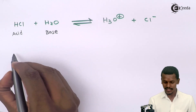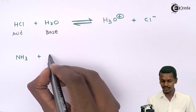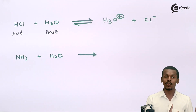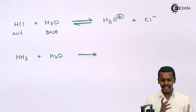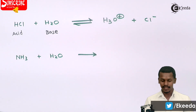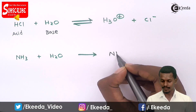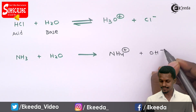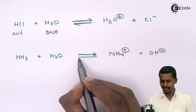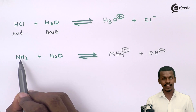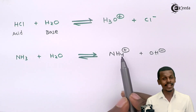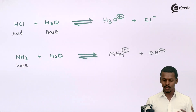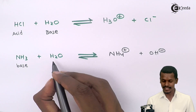Suppose we have NH₃ reacted with H₂O. The substance which accepts the proton is called a base, and the one which donates the proton is called an acid. When NH₃ reacts with H₂O, NH₃ accepts the proton to form NH₄⁺, while the remaining part is OH⁻. Because NH₃ accepted the proton, NH₃ is called a base according to Lowry-Bronsted theory. And since H₂O donated its proton to NH₃, H₂O is acting like an acid.